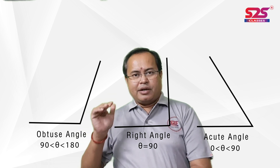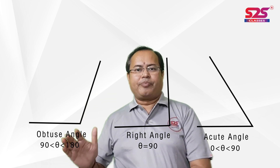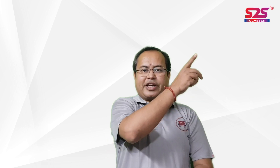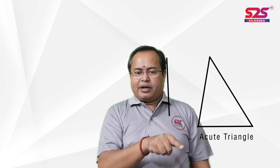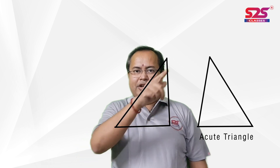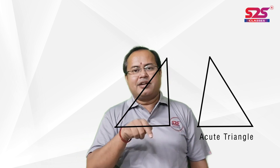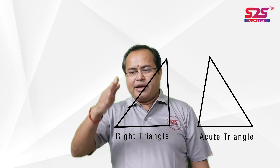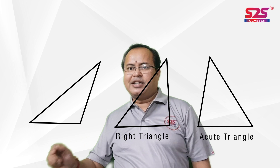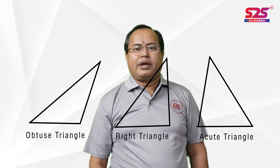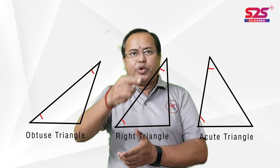In an obtuse angle, the angle is between 90 to 180 degrees. Now, take the case of an acute angle — we join a third line and we get two more angles, and the triangle we get is an acute triangle. For a right angle, we close it and get three sides — that is a right triangle. For obtuse angle, we get an obtuse triangle. We notice that the two new angles formed are always acute.